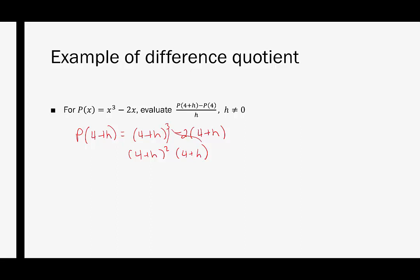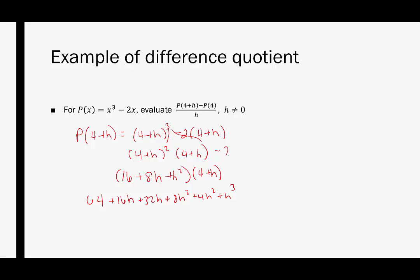We take the exponent and split it so we have a square times a factor of 1. Then 4 plus h squared is 16 plus 8h plus h squared, and we still need to multiply by 4 plus h. That gives us 64 plus 16h plus 32h plus 8h squared plus 4h squared plus h cubed. And there's another piece — minus 2 times 4 plus h — which multiplies out to minus 8 and minus 2h. We have to be very careful not to lose anything.